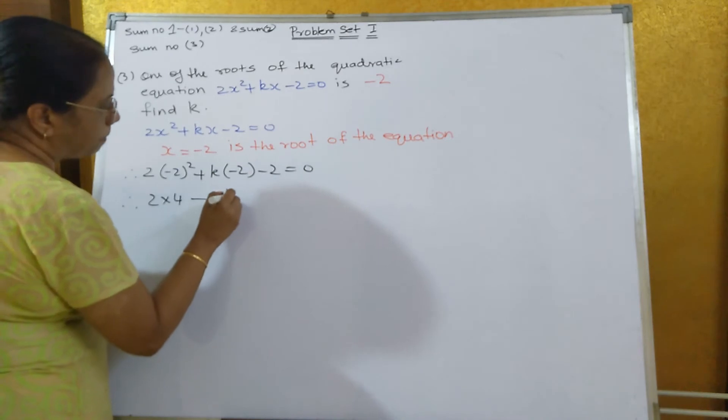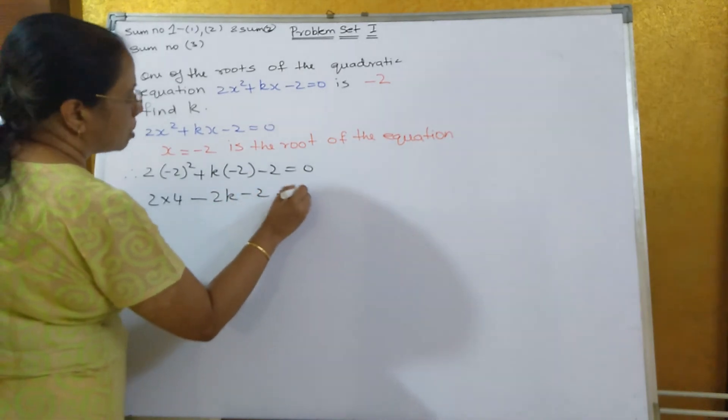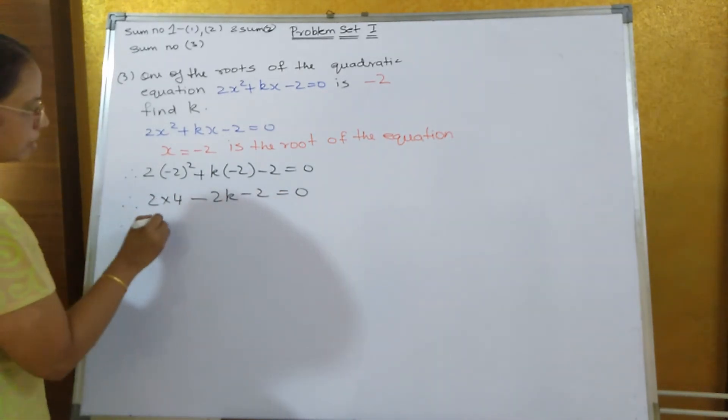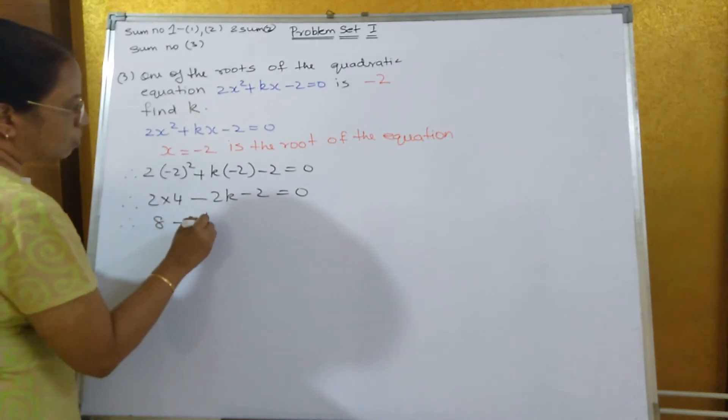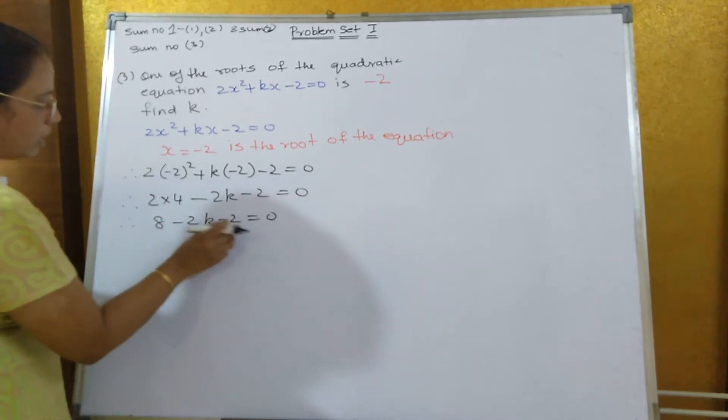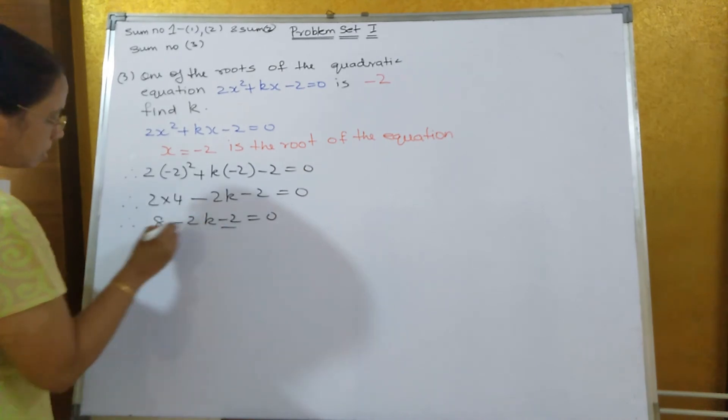2 times 4 is how much? 8 minus 2k minus 2 equals 0. When 8 minus 2 is how much? 6.